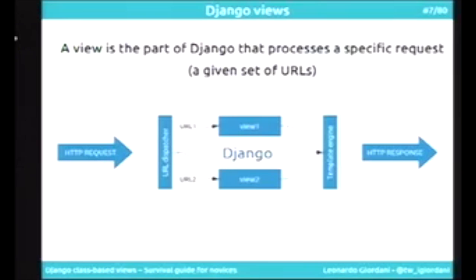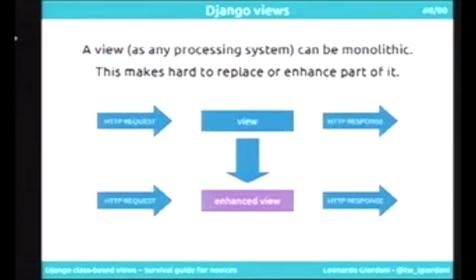There's a very simple mechanism. The URL dispatcher matches the URL with the regular expression, as you know, and finds a view that processes that specific URL and that specific HTTP method inside the request. Then it converts it into a response to the template engine or something different. And a view, just like any processing system in computer science, can be monolithic — for example, a single big function.